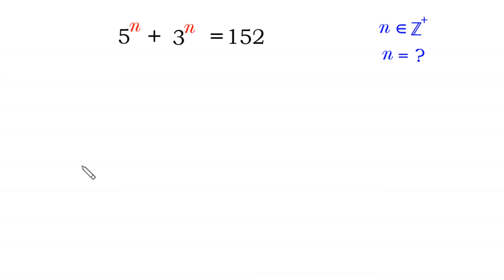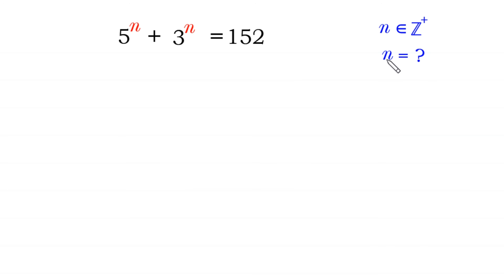Hello, welcome to how to solve this very nice exponential equation. 5 to the power n plus 3 to the power n is equal to 152. We need to find all possible values of n, where n is a positive integer.